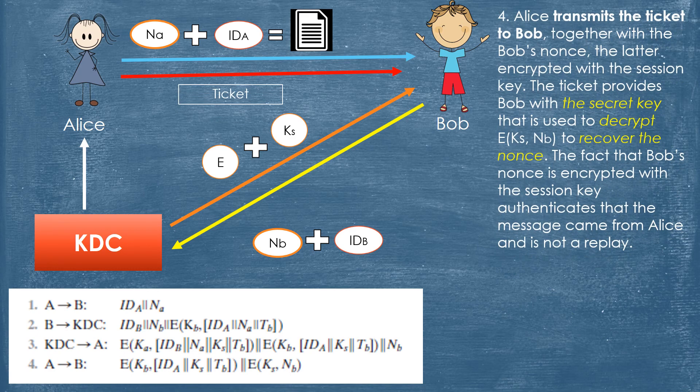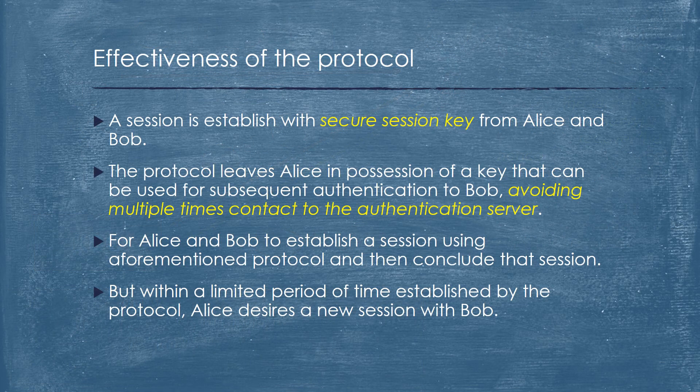Step 4: Alice transmits the ticket to Bob together with Bob's nonce, the latter encrypted with the session key. The ticket provides Bob with a secret key used to decrypt and recover the nonce. The fact that Bob's nonce is encrypted with the session key authenticates that the message came from Alice and is not a replay. A session is established with a secure session key. The protocol leaves Alice in possession of a key that can be used for subsequent authentication to Bob, avoiding multiple contacts with the authentication server.